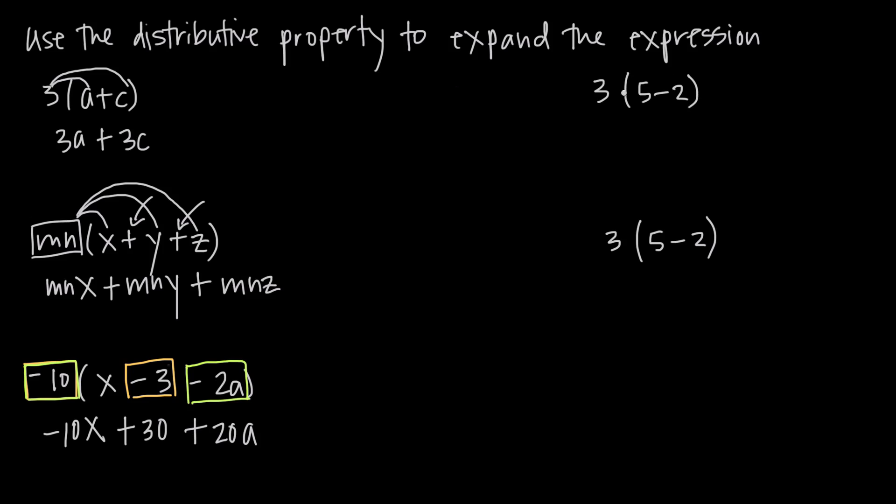If we use order of operations to evaluate this expression, what we would do is solve for the value inside the parentheses first. So we would keep the 3 on the outside. Inside the parentheses we have 5 minus 2, which is 3. So we have 3 times 3, and we know that 3 times 3 is 9. So we get a value of 9 when we use order of operations.